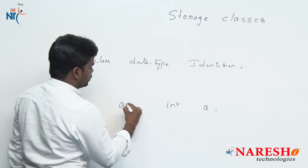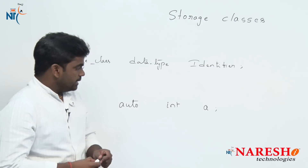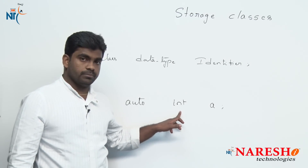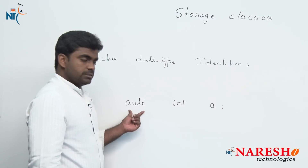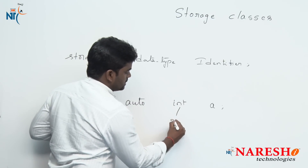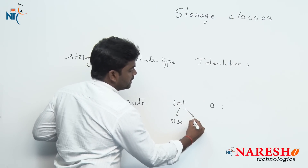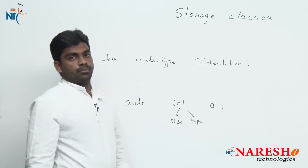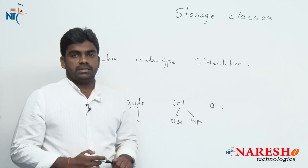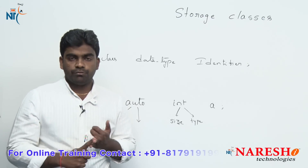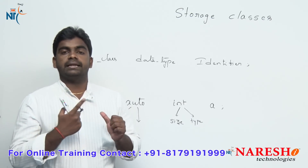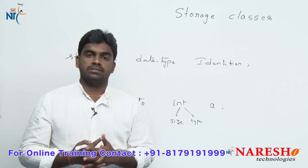For example, auto is one storage class. In the declaration of a variable, we need to specify not only its data type but also its storage class. What does storage class represent? Data type represents the size and the type of data allowed. Storage class represents many things: what is the default value, what is the scope of the variable, what is the lifetime of the variable, where we can access it, and where it gets memory allocation.